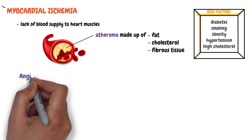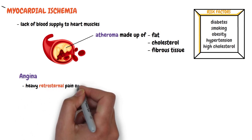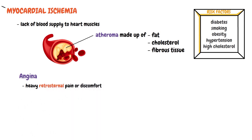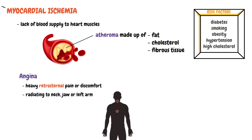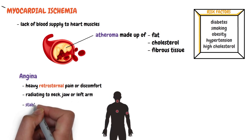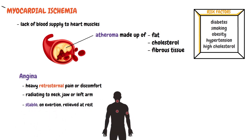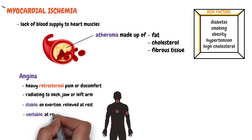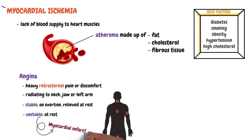At first this leads to angina, in which the patient feels pain or discomfort just behind the sternum which radiates to the neck, jaw, or the left arm. This is initially stable, occurring only on exertion and relieving at rest, but it can progress to unstable angina which occurs even at rest. This can also worsen to a myocardial infarction — the dreaded heart attack.